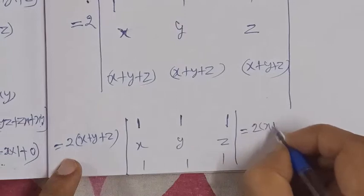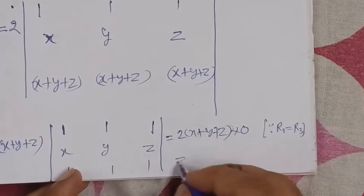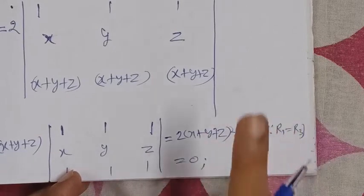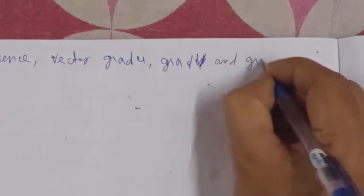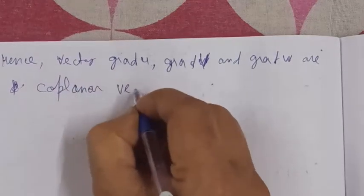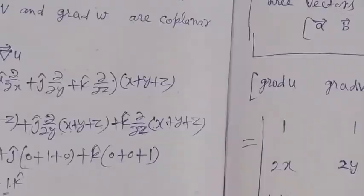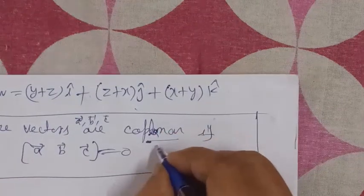The value becomes 2(x+y+z) times the determinant, and this determinant equals zero because Row 1 and Row 3 are identical — both equal [1, 1, 1]. Since R1 equals R3, the determinant is zero. Therefore the scalar triple product equals zero, which proves that grad u, grad v, and grad w are coplanar vectors. Alhamdulillahi Rabbil Alameen. Thank you very much.